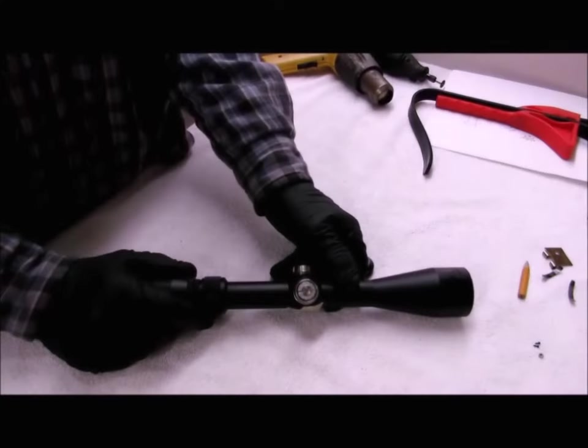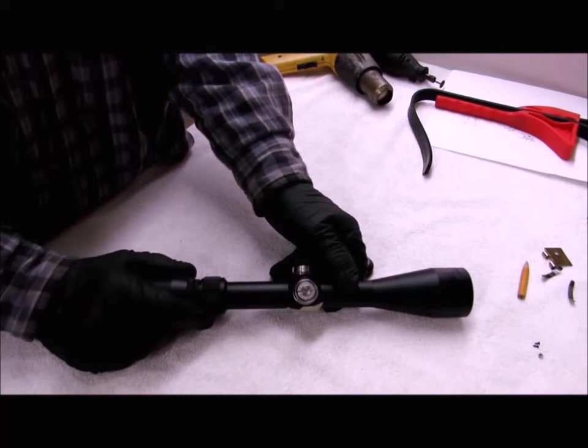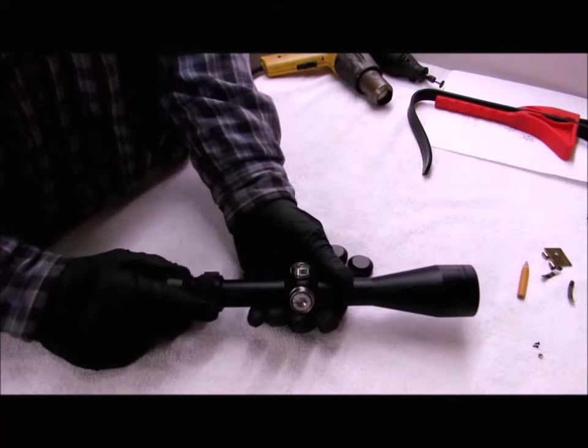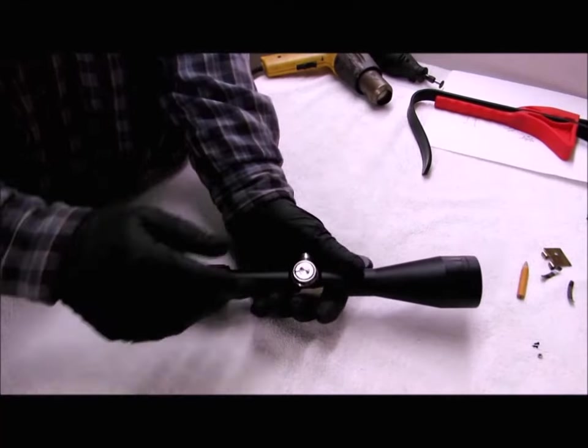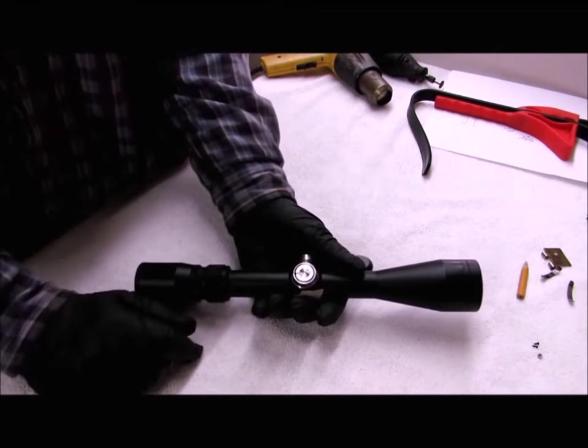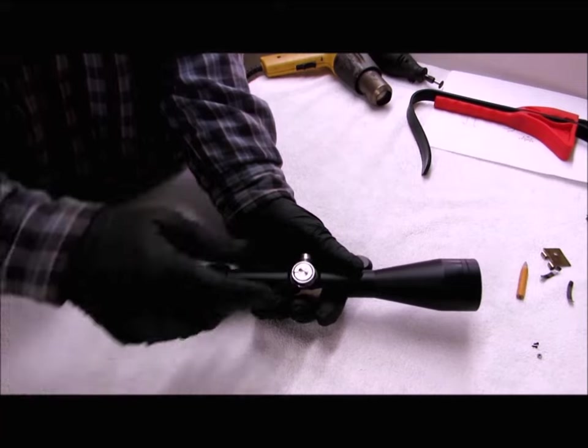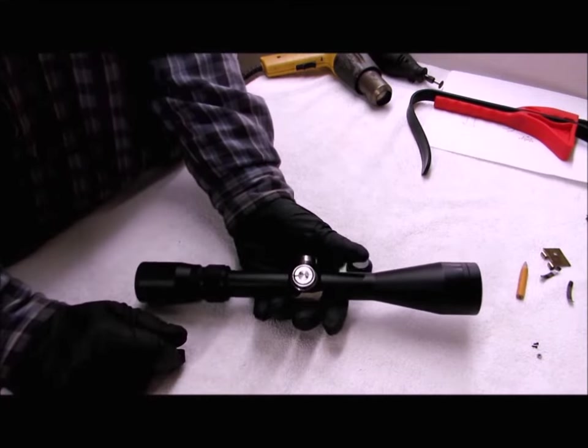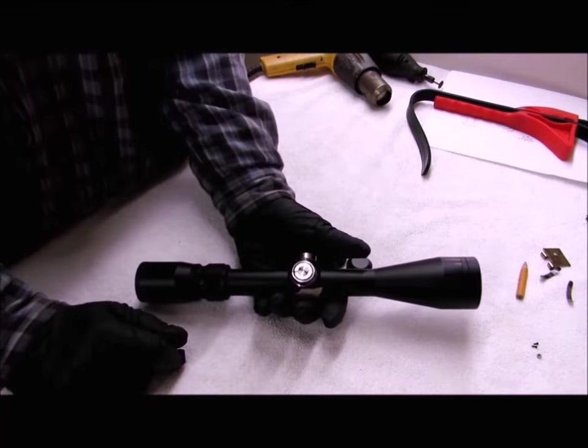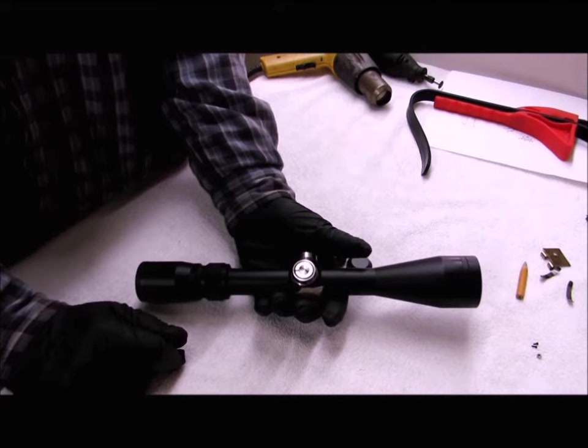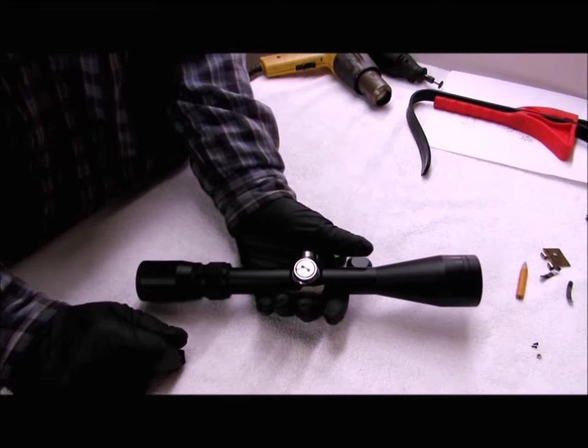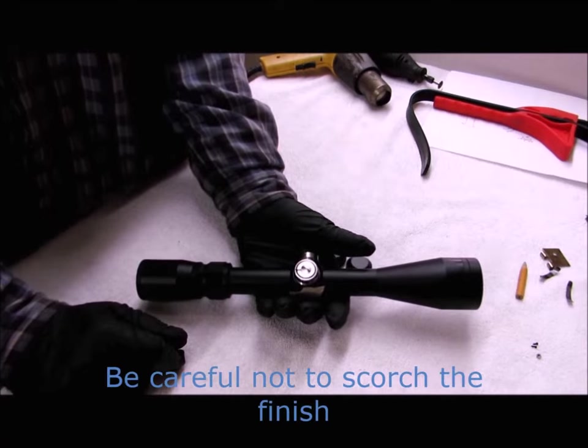I'll begin by removing a turret as you can do this with the scope still mounted to the rifle if you choose. Now these turrets as well as the internal parts of the scope are assembled using a thread locking compound. So in order to remove these parts without damaging them, I recommend you use some heat. The maximum working temperature of the thread locking compound is 300 degrees Fahrenheit, so you're going to need some heavy gloves to protect your hands.